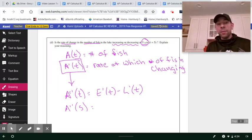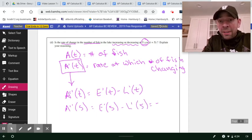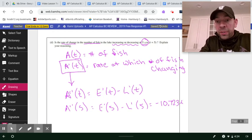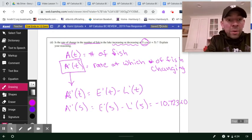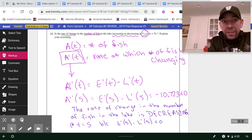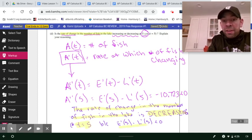What I want to do is evaluate this A double prime function specifically at 5. And in a nutshell, if I get a positive answer, I could backtrack and say A prime is increasing. Or if I get a negative answer, I can go back and say A prime is decreasing at this particular moment. So on my calculator, I'm evaluating E prime of 5 minus L prime of 5. I got about negative 10.723, which is certainly less than 0. So at the end of the day, we are going to say that the rate of change in the number of fish is decreasing at 5 a.m. The rate of change in the number of fish in the lake is decreasing at T equals 5 because E prime of 5 minus L prime of 5 is less than 0.